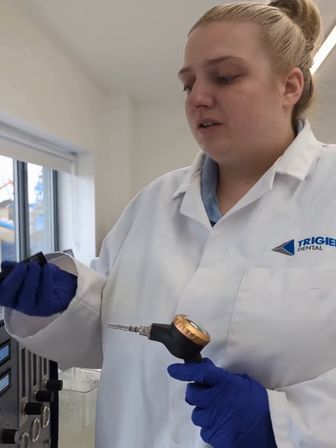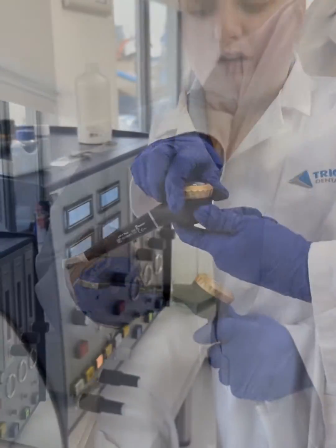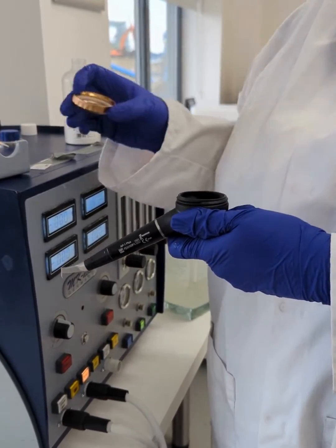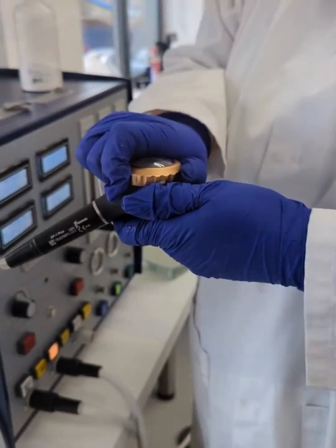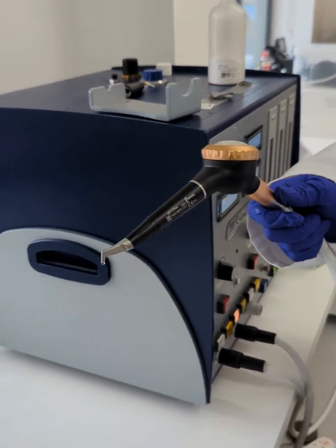I'm going to show you how to use the prophy handpiece. So you put the prophy nozzle on to fill the ball with some prophy powder. Screw that ball back on and now it's ready to use.